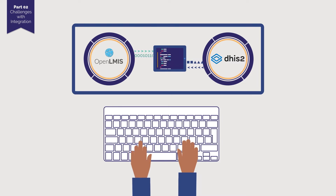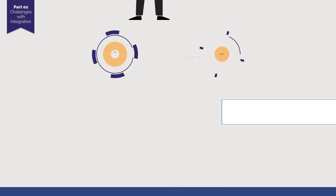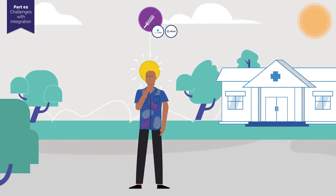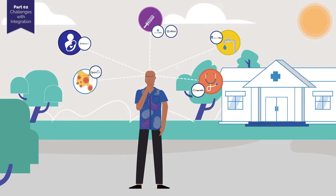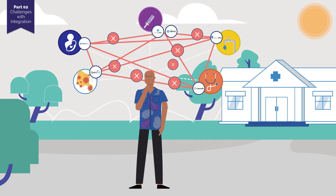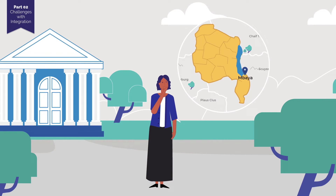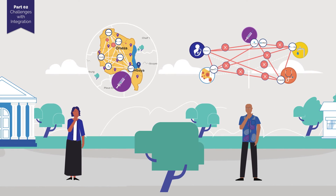This sounds like a good strategy for solving this simple use case. However, Isaac doesn't just manage immunisation, but all the health programmes in his district, many of which are supported by their own applications that could benefit from communicating with each other. And Lucy doesn't just work in this district, but manages the whole country's immunisation programme, and she needs many other districts' applications to be able to communicate as well.